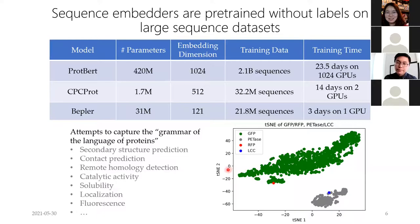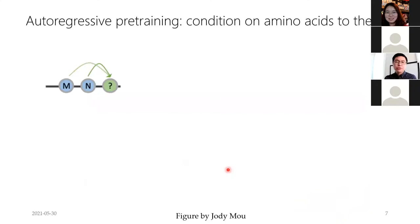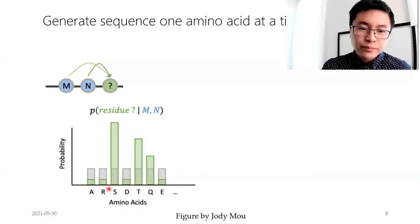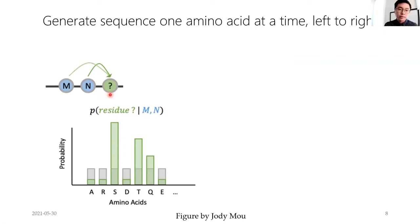How are these models trained? Some models are pre-trained autoregressively. You start from methionine — a start token — and predict the probability of the next amino acid, then decode by sampling from that distribution. You pick some residue, for example serine, and generate one amino acid at a time from left to right, sort of like sentence generation.